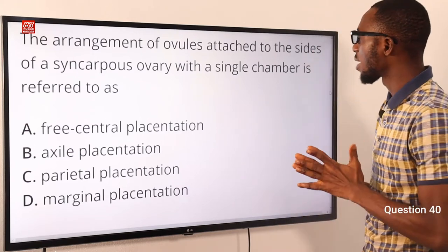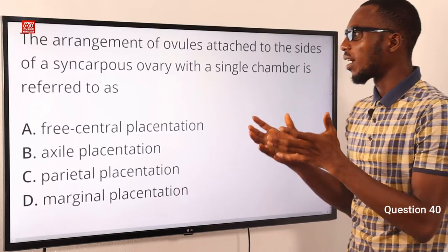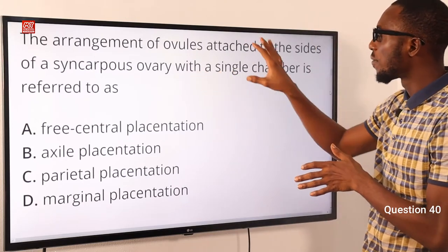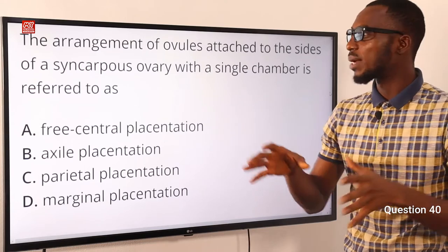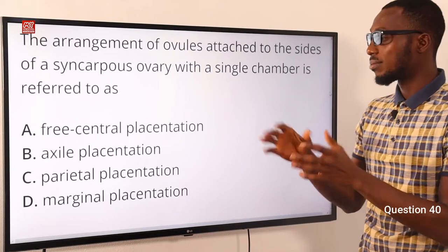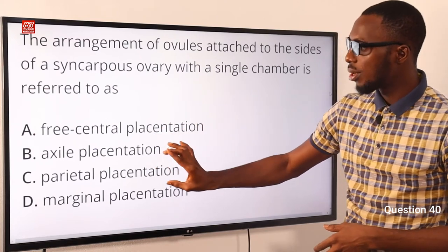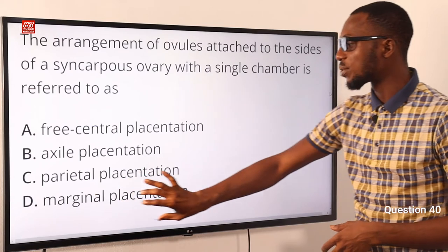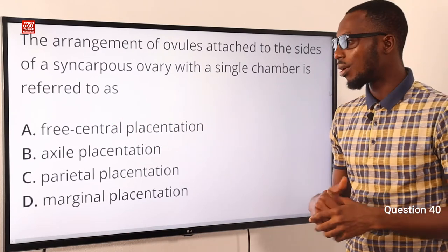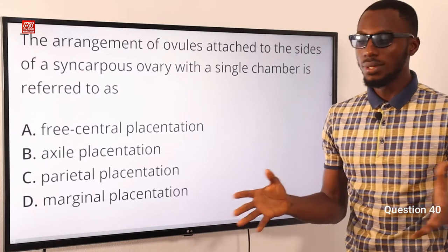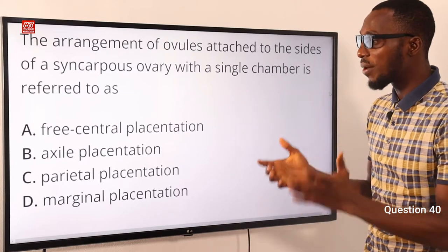Question 40. The arrangement of ovules attached to the sides of a syncarpous ovary with a single chamber is referred to as what? When you talk about arrangement of ovules in a plant, you are talking about placentation. For a syncarpous pistil, we have free central placentation, axial placentation, and parietal placentation. For marginal placentation, it is a monocarpous pod. An example of free central is carnation; axial placentation — tomato; parietal placentation — Carica papaya. The correct option is option C for parietal placentation.